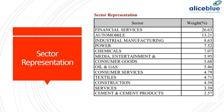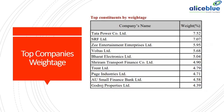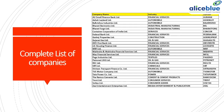Let us see which companies have the highest weightage in this index. Tata Power Company Limited has the highest at 7.52%, followed by SRF at around 7%, then G Entertainment, Voltas, Bharat Electronics, Shriram Transport, Trent, Page Industries, AU Small Bank, and Godrej Properties. These are the main companies with the highest weightage in this index fund, which will start F&O trading on the NSE platform from the 24th onwards for investors and traders.